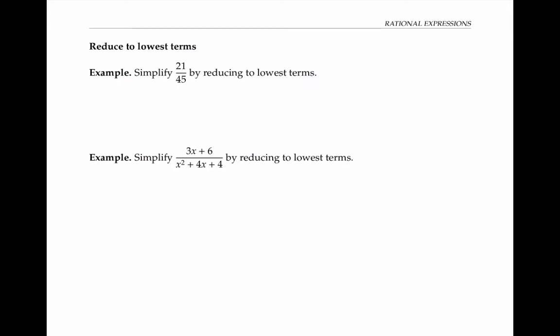We'll start with simplifying to lowest terms. Recall that if you have a fraction with just numbers in it, something like 21 over 45, we can reduce it to lowest terms by factoring the numerator and factoring the denominator and then canceling common factors. In this example, the threes cancel, and our fraction reduces to seven over 15.